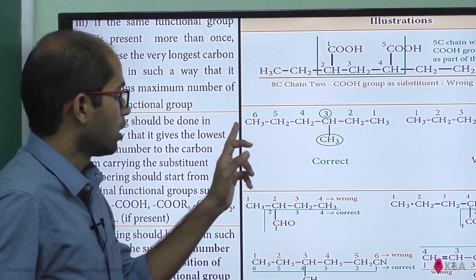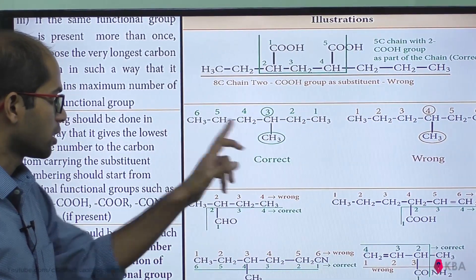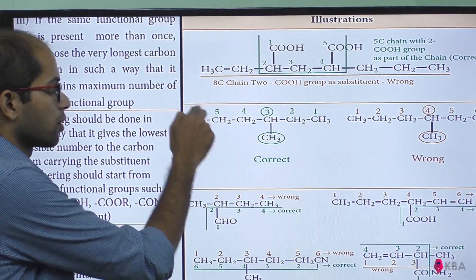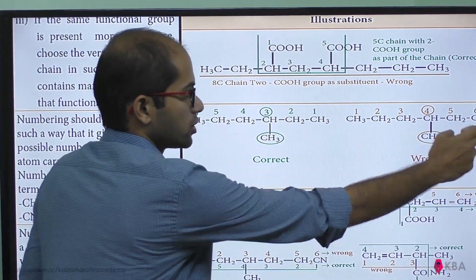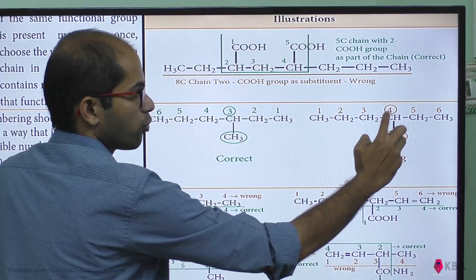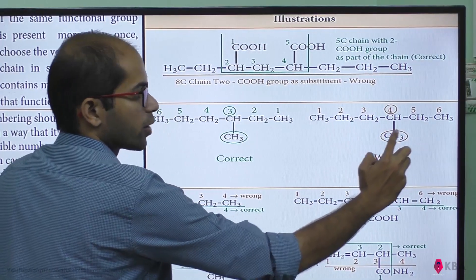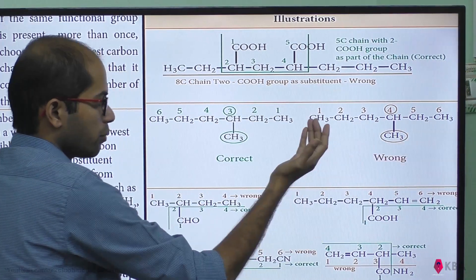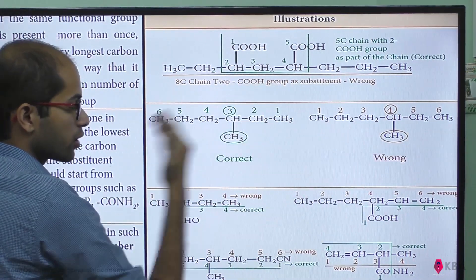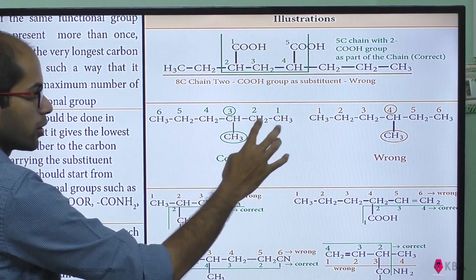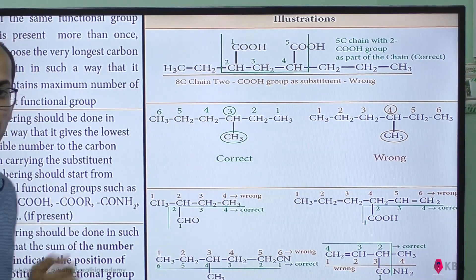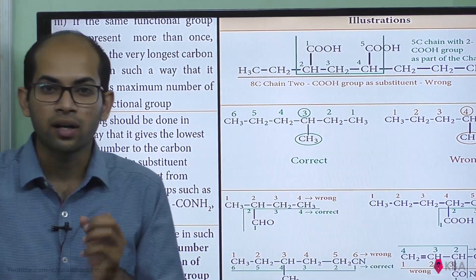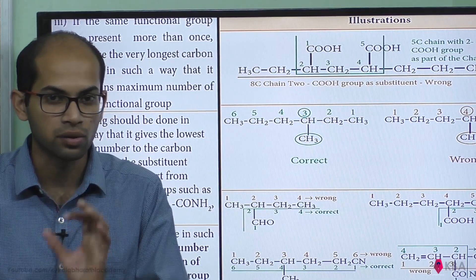Now, we will get the first parent chain, called R-carbons. If you do not know the number, you can number right to left to determine the correct direction. So this is the correct representation — lowest number for the substituent.